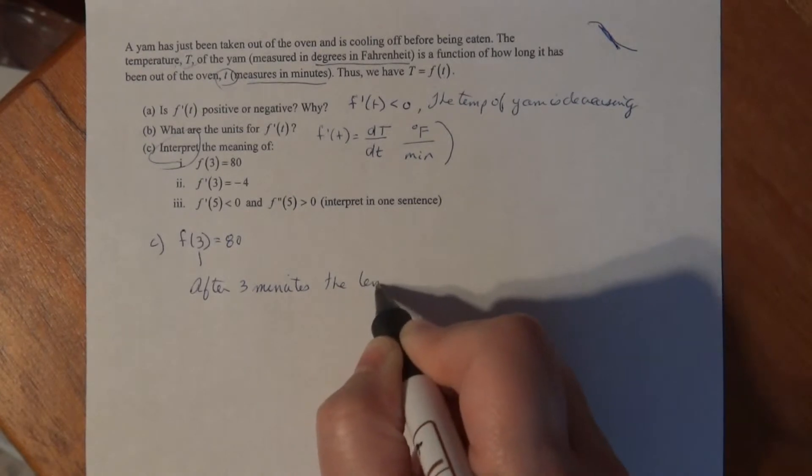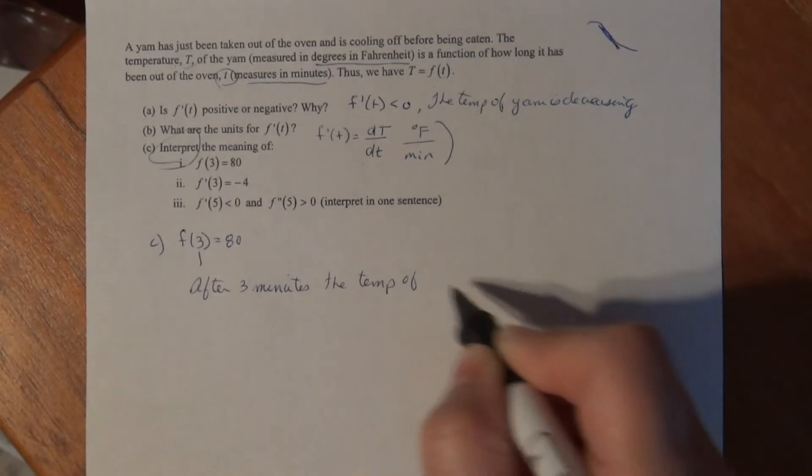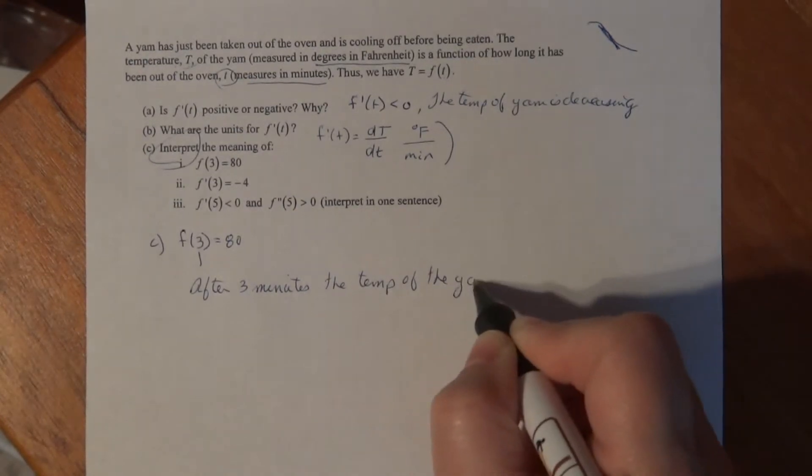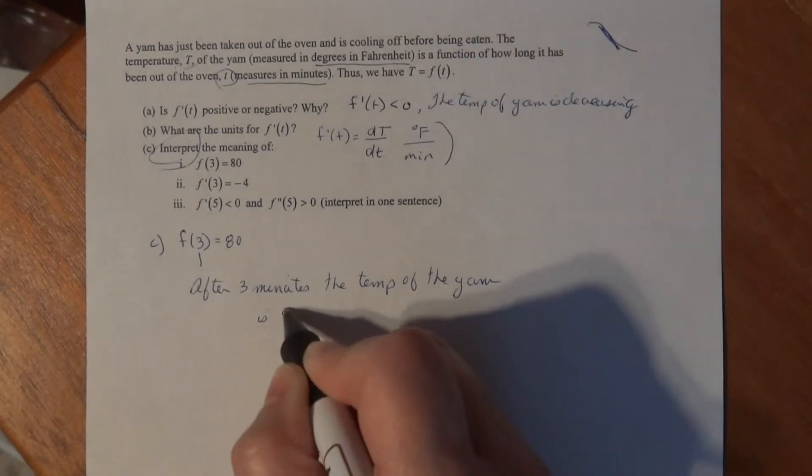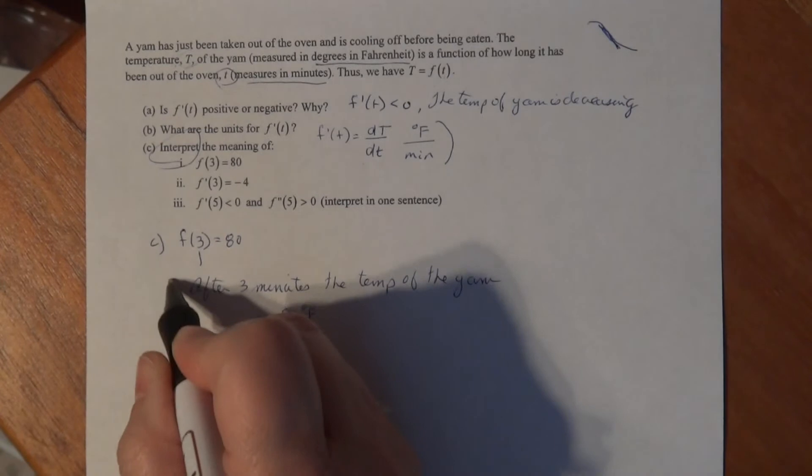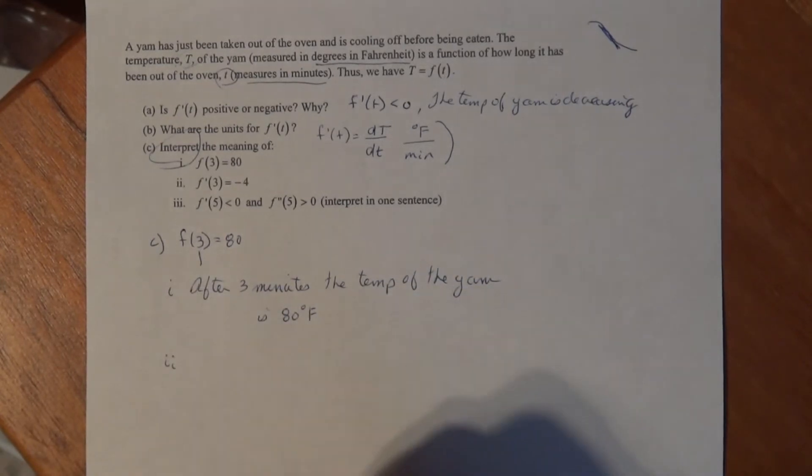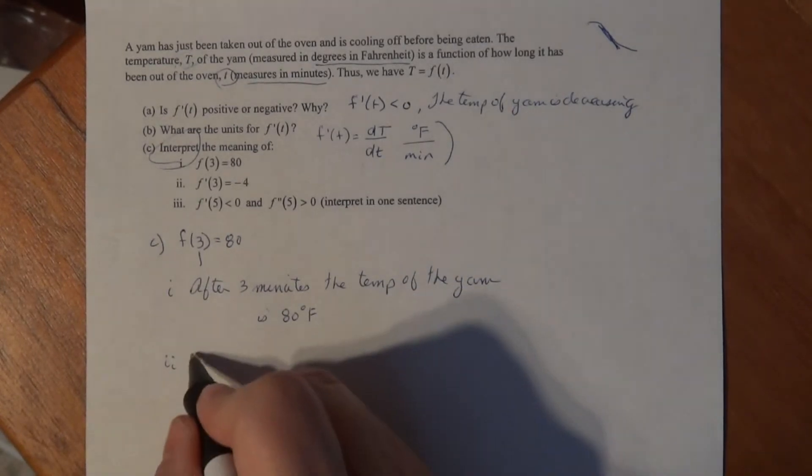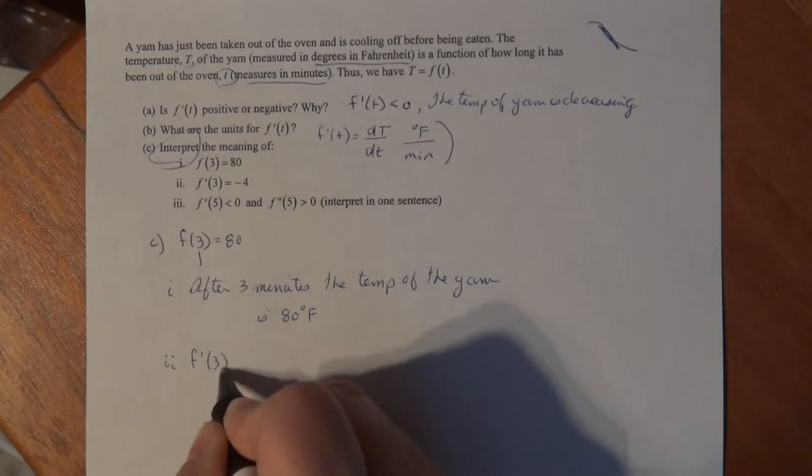The temperature of the yam is 80 degrees Fahrenheit. Now, the second one: F prime of 3 equals negative 4.